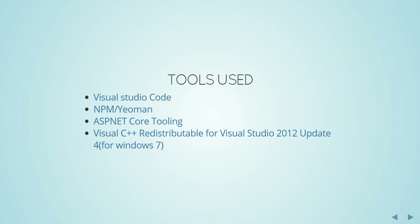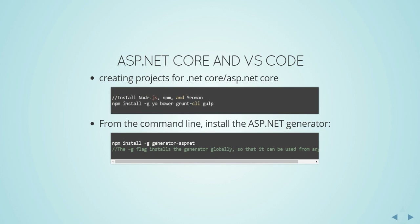We also need the ASP.NET Core tooling and, if you're on Windows 7, the Visual C++ redistributable. For ASP.NET Core projects you need Node, npm, and all these packages installed. Once you install Node.js, npm is automatically installed as well. Then you run the command: npm install -g yo bower gulp, which installs these four packages globally — the hyphen g flag means machine-wide installation.